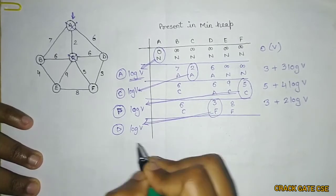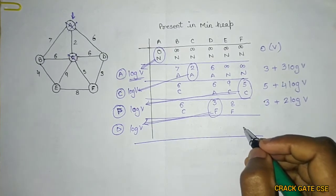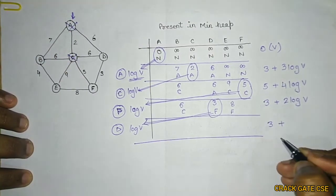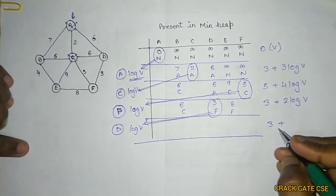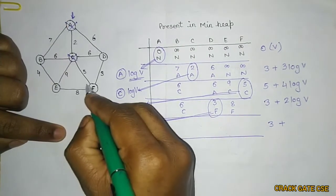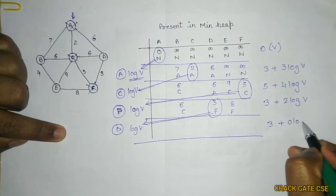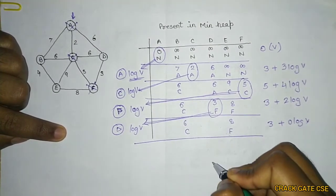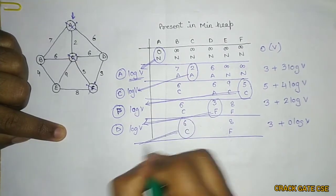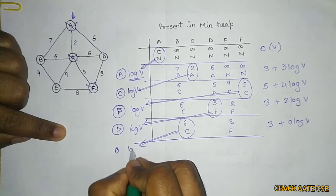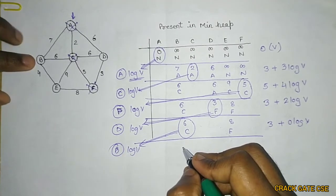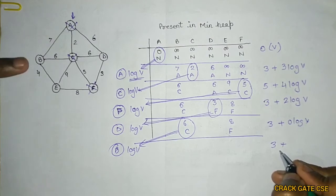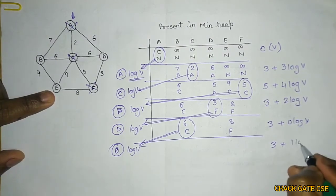For D, the adjacent vertices are A, C, and F — 3 vertices. But A is covered, C is covered, and F is also covered. So we perform the decrease key operation at 0 places: 0 log V. Next, the minimum is B (value 6). We extract B, taking O(log V). B's adjacent vertices are E, C, A — 3 adjacent. Only E is not covered, so we perform the decrease key operation at 1 place: 1 log V.